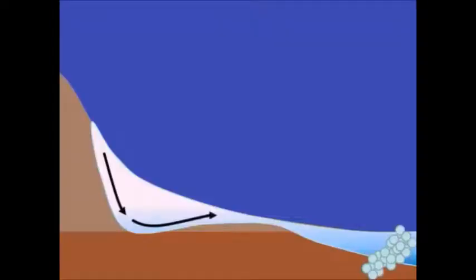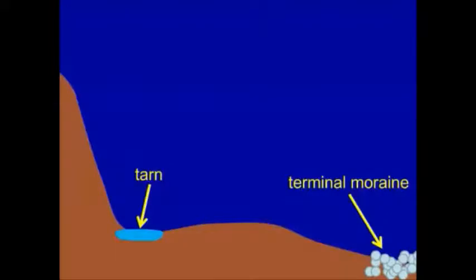When all of that ice is removed, the sediment is going to fall in place at the end of that previous glacier, and what's created is what we call a terminal or end moraine. Further, in that cirque depression, what fills that very low-lying area is water. The meltwater — from that glacier or from glaciers further upslope — will fill that depression, and we call that a tarn.